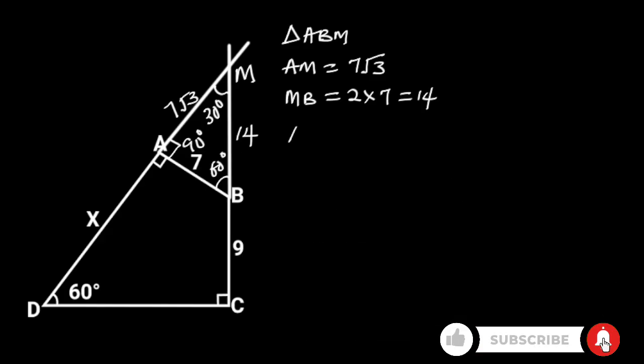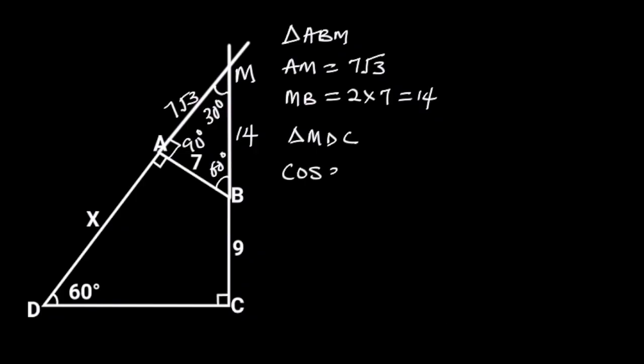Next, let's consider triangle MDC. From SOHCAHTOA, cos 30 degrees is equal to MC over MD. Cos 30 degrees is equal to root 3 over 2.